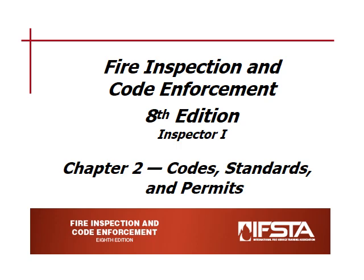Lesson Goal: After completing this lesson, the student shall be able to explain codes, standards, complaint processes, and permits. Objectives: Upon successful completion, the student shall be able to: 1. Identify appropriate resources for finding current and applicable codes and standards — NFPA 1031, 4.2.5. 2. Explain complaint procedures — NFPA 1031, 4.2.4. 3. Describe the role of an Inspector I in the permitting process — NFPA 1031, 4.2.2.